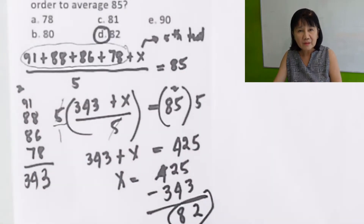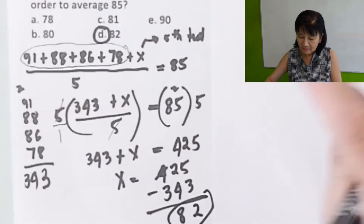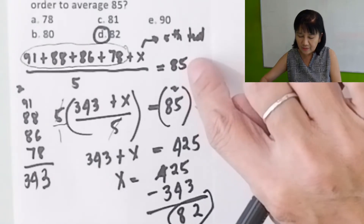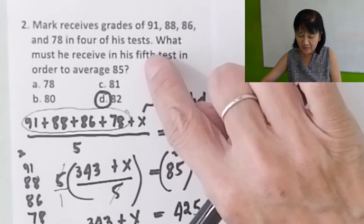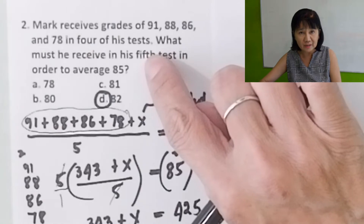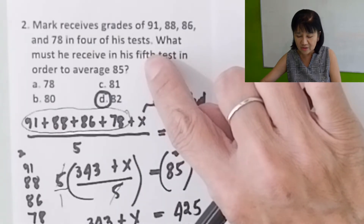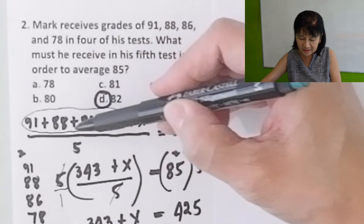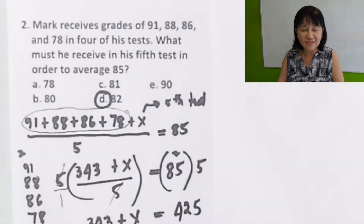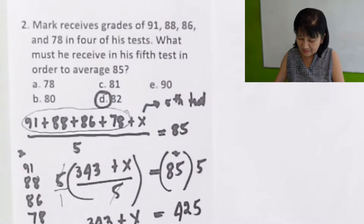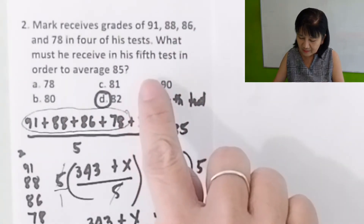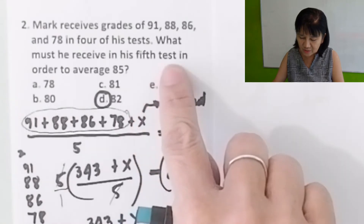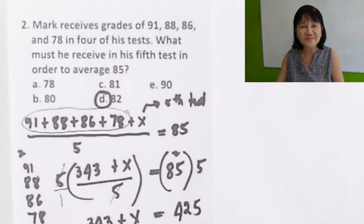Alternatively, you can just multiply 85 times 5 because there are 5 tests to get 425, then subtract the sum of the 4 tests to get the grade on the 5th test needed to average 85. That's another option.